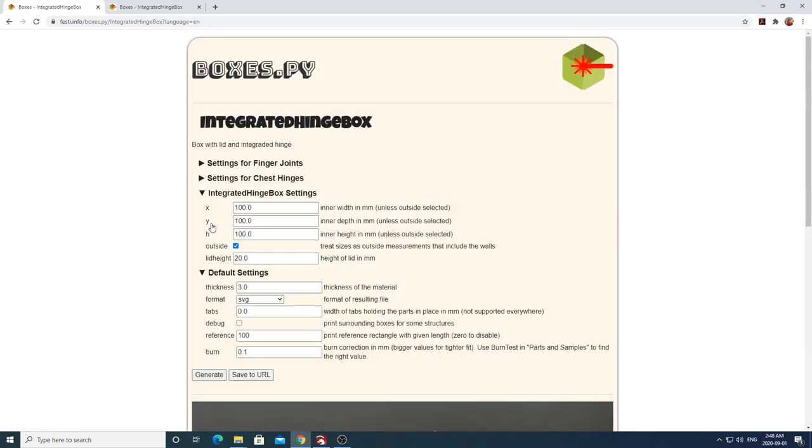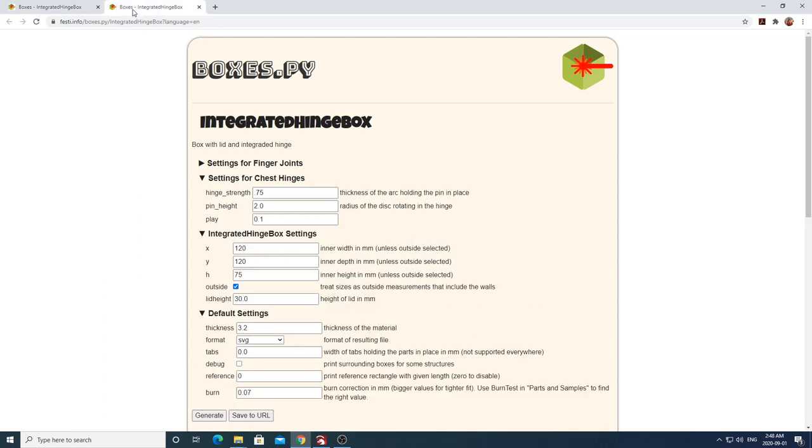I've already went ahead and preloaded all my settings into the configuration and I'll run you through that now. I have my hinge strength set at 75, my pin height to 2, and my plate to 0.1. I have my inner width set to 120, my inner depth set to 120, and my height set to 75, and these are millimeters. I also have outside measurements checked and I have the inner height of my lid set to 30 millimeters.